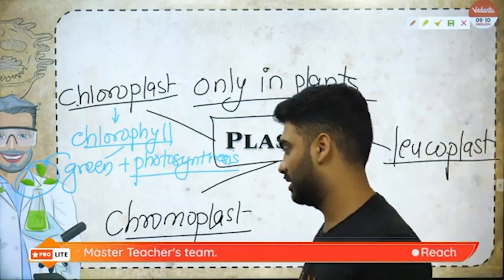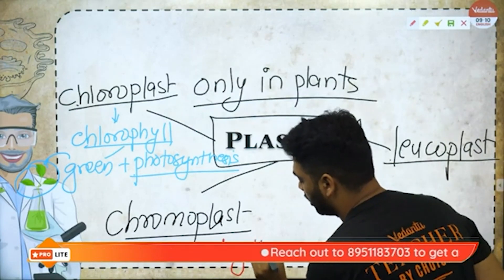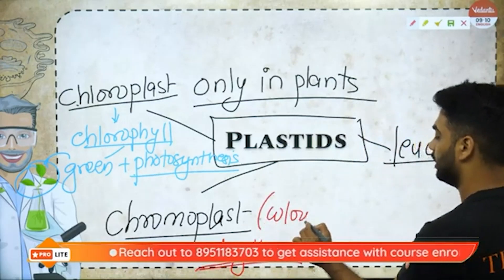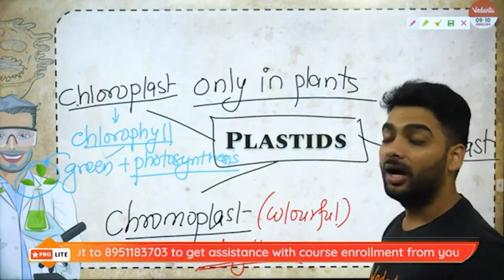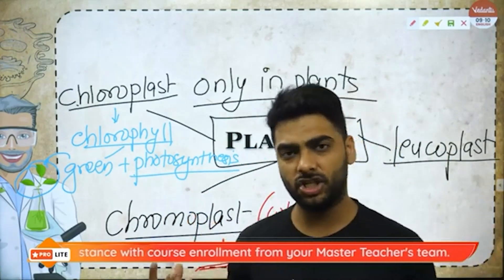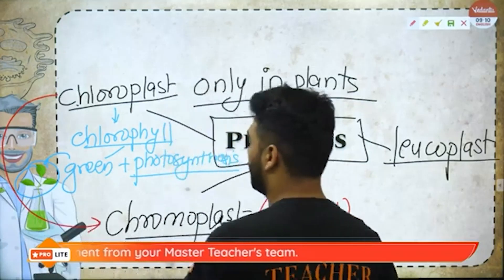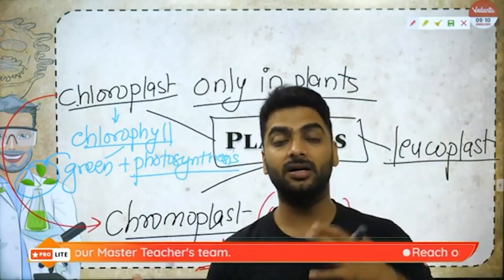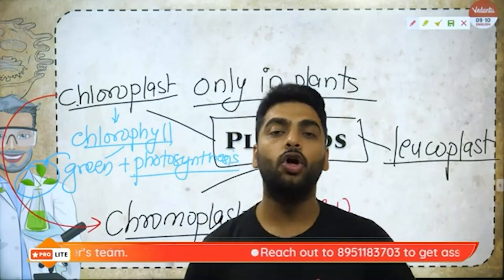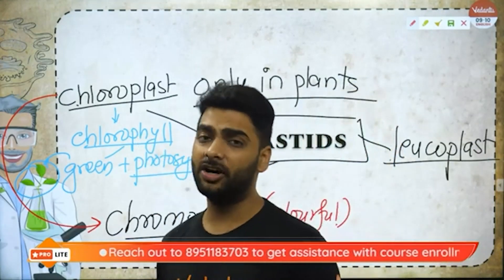Then we talk about chromoplast. Your red and yellow colors come from the chromoplast — it is the colorful plastid. A green mango becomes a yellow or reddish-yellow mango because chloroplast converts to chromoplast. A green tomato becomes a red tomato on ripening because chloroplast turns to chromoplast.